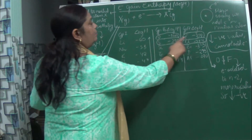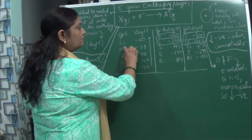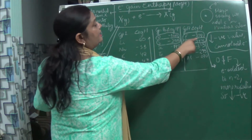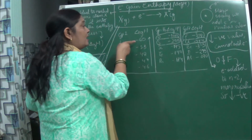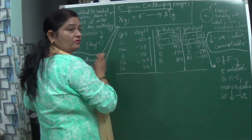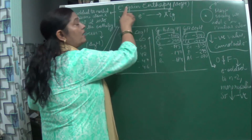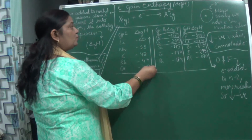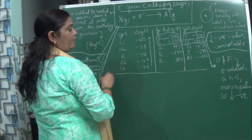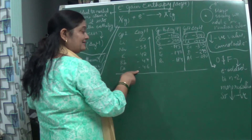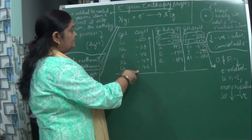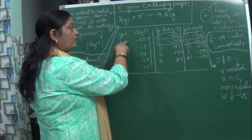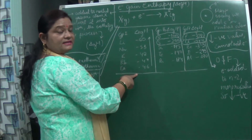Looking at trends along the period, as we go from left to right, the electron gain enthalpy becomes more negative. For example, we see values of minus 60, minus 141, and minus 328 increasing in magnitude across a period. But when we look at the group, we see a decrease: lithium has minus 60, while cesium has minus 46, showing less negative electron gain enthalpy as we go down the group.